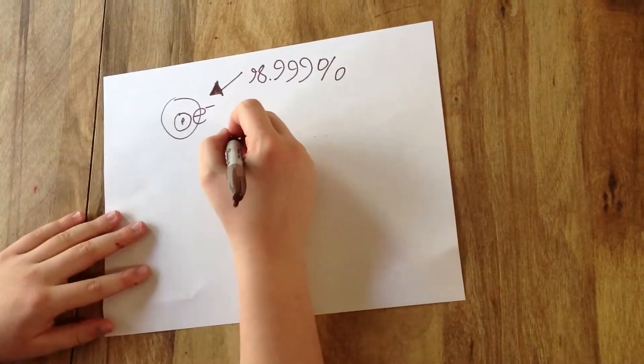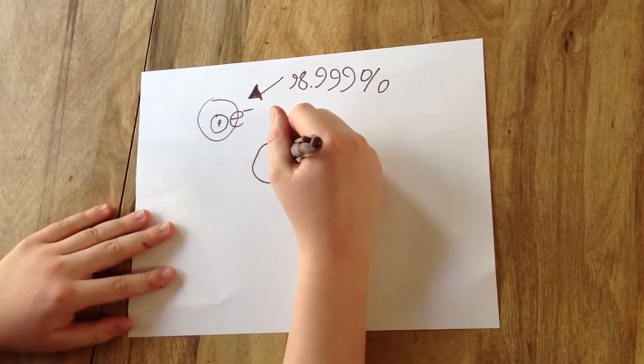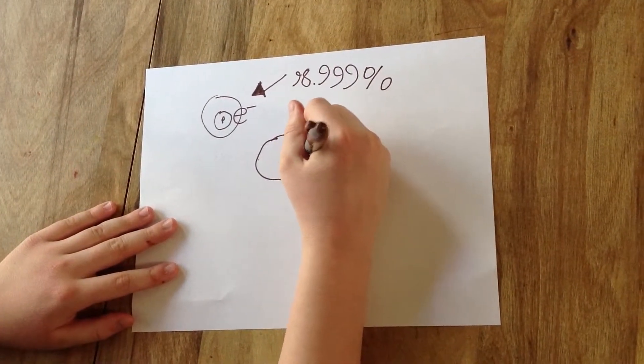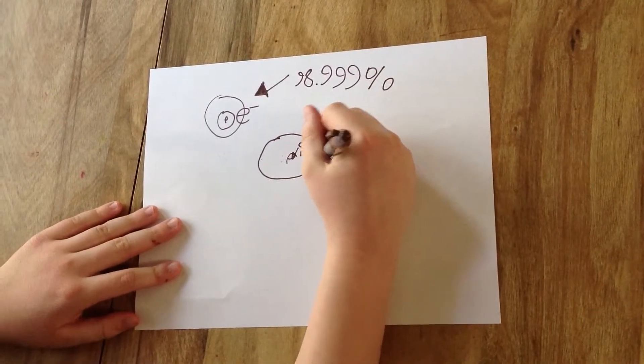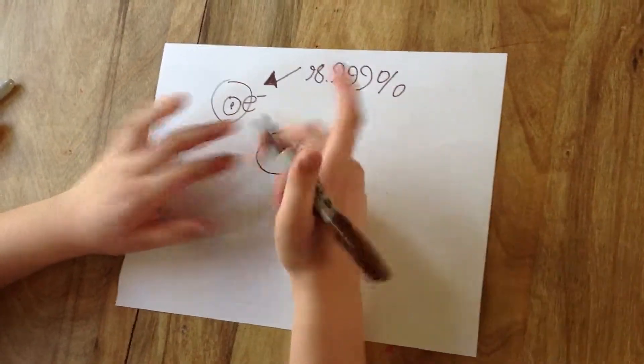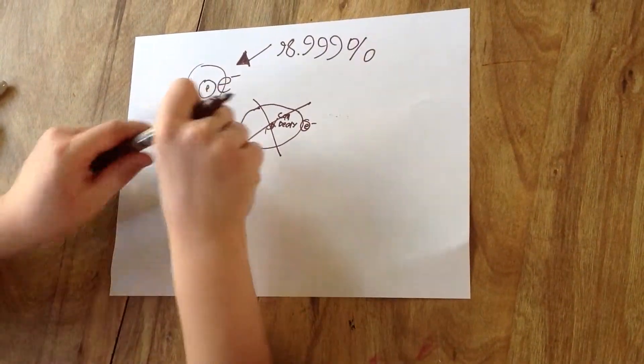Now, what makes protium so special is that this proton can decay. This electron does not decay, but in a very long time, this can theoretically blink out, leaving no atom.